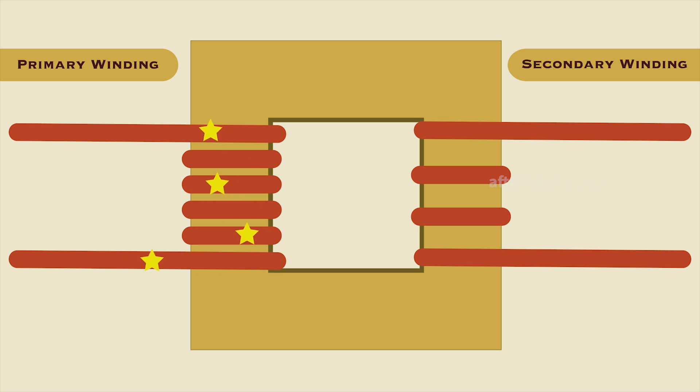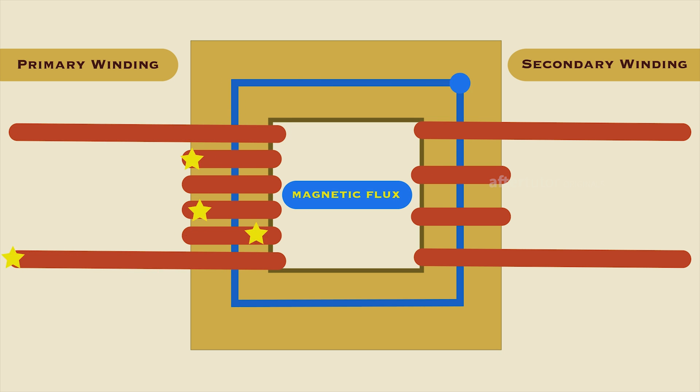alternating current circulates the winding and creates an alternating magnetic flux, which passes through the magnetic iron core. This alternating magnetic flux induces a voltage in the secondary winding.